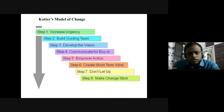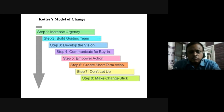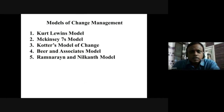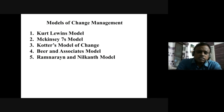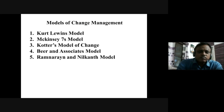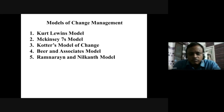Kotter's model is a very popular model across the world, and many organizations have adopted it. Other models — such as McKinsey's 7S model, Beer and Associates' model, and Ram Narain and Nila Khan's model — are not required for this syllabus but are available for further reading. A book chapter covering all these models will be shared for anyone interested. That concludes this session.